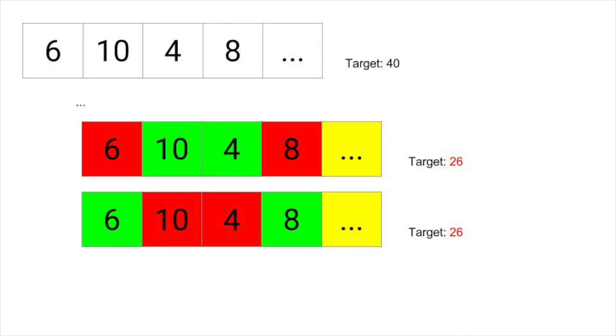Here, the path using 10 and 4 gives us the same target as the path using 6 and 8, and we'd have to completely redo the subproblem looking for 26 as the target in the rest of the list.